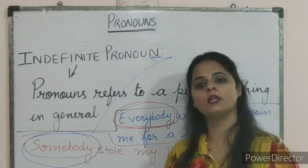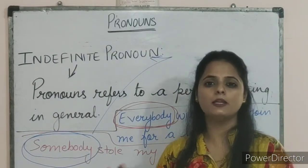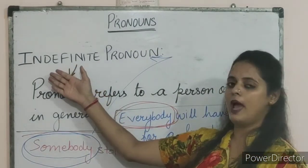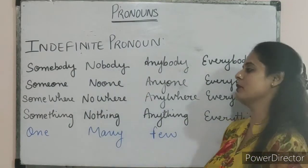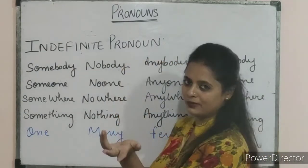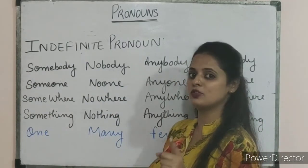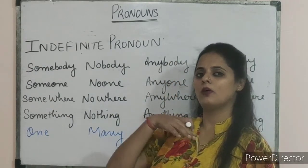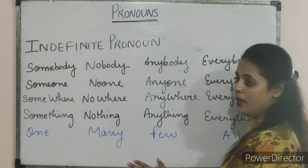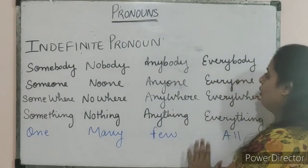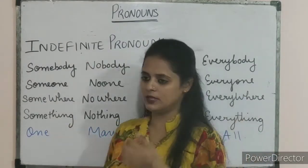Students, words like anyone, no one, everybody, somebody, everyone, nobody, etc. are the words used as indefinite pronouns. On the board you can see many kinds of indefinite pronouns: somebody, someone, somewhere, something, one — for example, 'somebody told me,' 'someone saw me,' 'somewhere you are going,' 'something there is something which you are hiding.' Also nobody, no one, nowhere, nothing, many, anybody, anyone, anywhere, anything, few, everybody, everyone, everywhere, everything, and all — these are all indefinite pronouns.